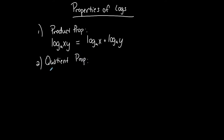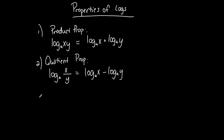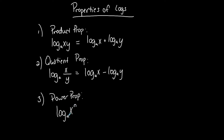The quotient property: a log of any base of a quotient — a fraction, division — can be separated into a difference, subtraction of the two separate logs. And then the power property of logs is when I have a log of any base of anything to an exponent, and this exponent has to be on the whole expression. I can rewrite this by taking the exponent to the front and converting it into a coefficient. This is when the base is not the same as the exponent value; there's another property where the bases are the same and it simplifies into the exponent.